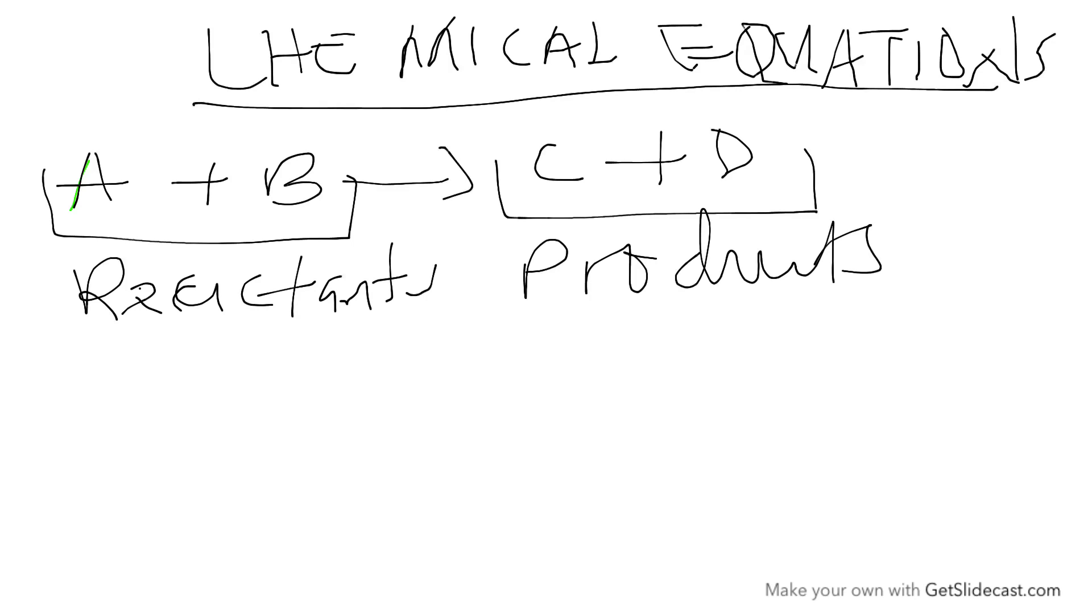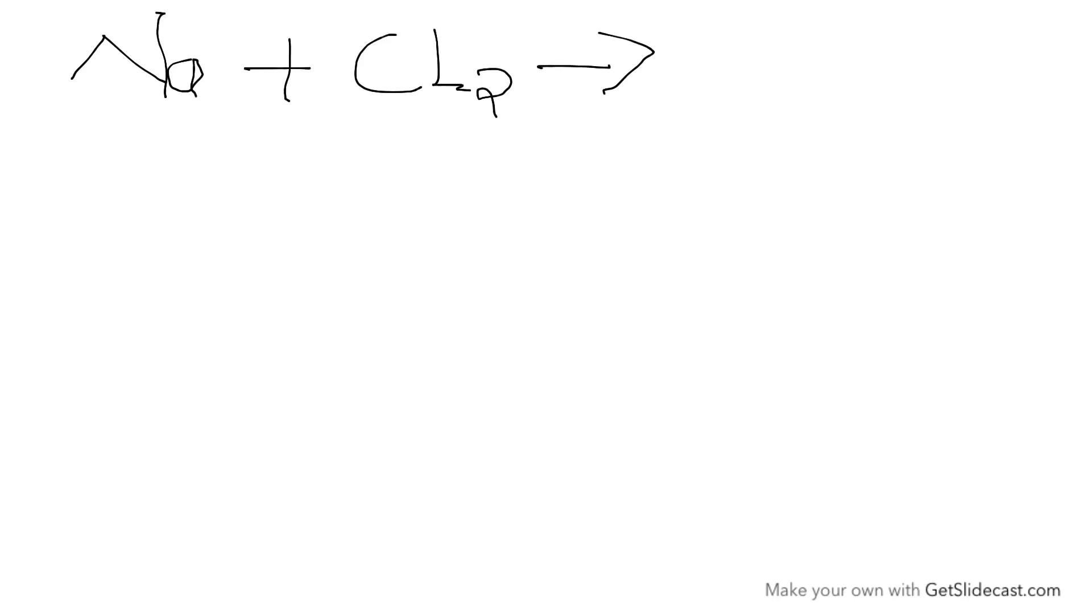Therefore, we will look at some rules that you need to know when it comes to writing chemical equations. I'm going to use some simple elements. Let's say you are given sodium reacting with chlorine. From introduction to chemistry, you need to know that sodium is a cation. It forms a positive ion. And chlorine is a non-metal. It forms a negative ion like that.